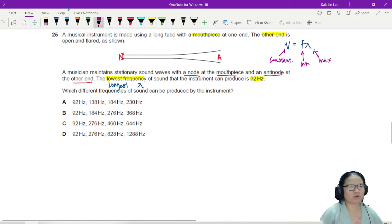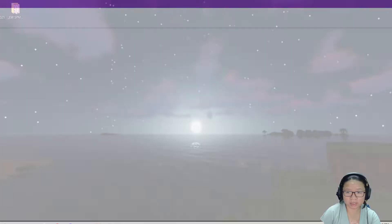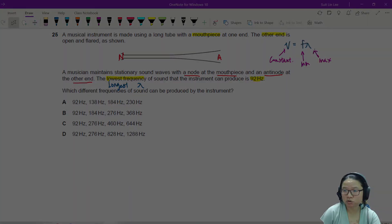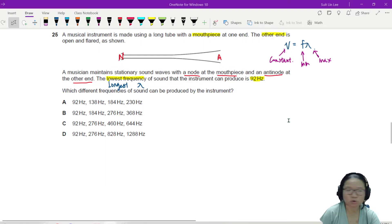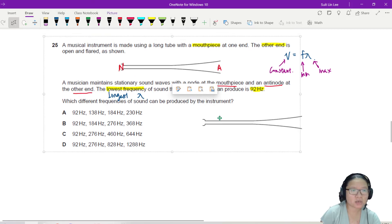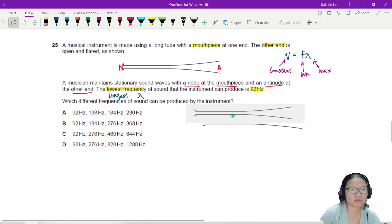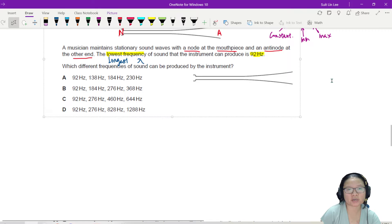Which different frequencies of sound can be produced by the instrument? So to help us visualize this, sometimes the students will memorize the pattern, which will always be the faster way to solve the question. But let's say you totally don't know what to memorize now. So we're going to start drawing. In other words, I'm going to crop a diagram. So this is the instrument and you will have to start drawing.